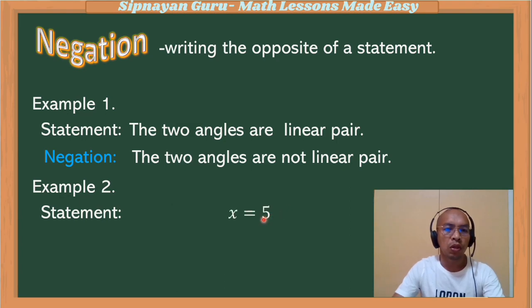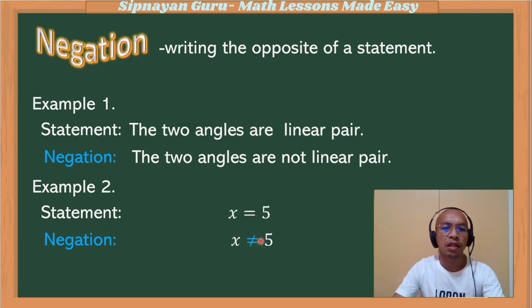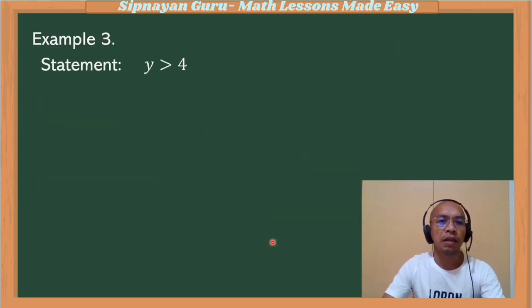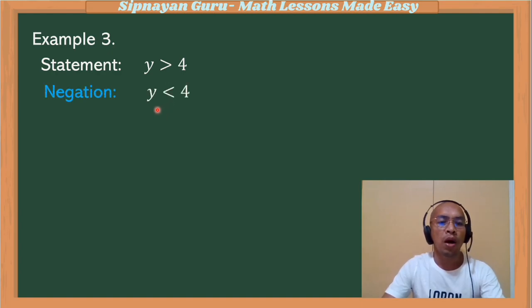Example number two: x is equal to 5. Its negation: x is not equal to 5. The mathematical symbol for not equal to is ≠. Example number three: y is greater than 4. Its negation: y is less than 4, or it can be y less than or equal to 4.